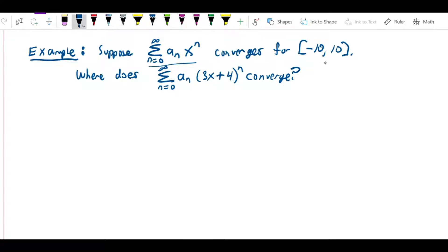What we can see here is that the given series has a center of 0, and its interval of convergence is negative 10, 10. What that means is that the sum from n equals 0 to infinity of a_n x^n has a radius of convergence of 10. That's clear. We have negative 10, 10, we've got 0 in the middle, so clearly r equals 10. That's the amount that the interval of convergence extends in either direction.